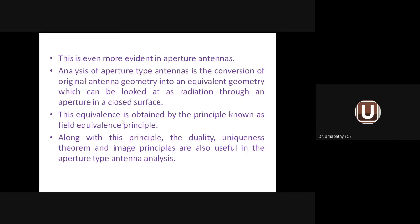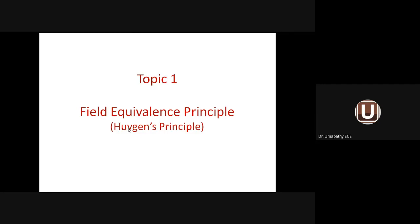To obtain the equivalence we apply a principle known as the field equivalence principle or Huygens' principle. Using this principle, the original geometry of the aperture antenna is converted into an equivalent geometry. From the equivalent geometry we can calculate the radiation characteristics of the aperture antenna — once known, we can analyze and conclude the antenna's performance for a particular application.